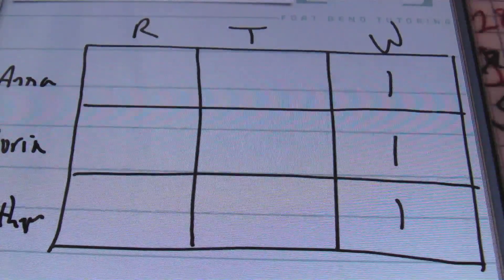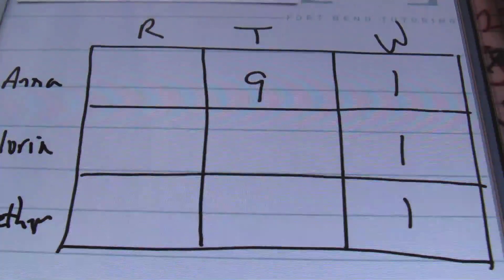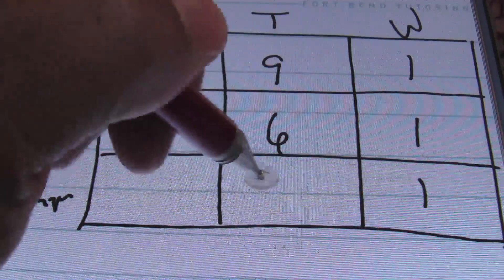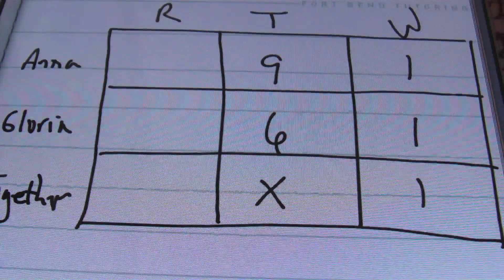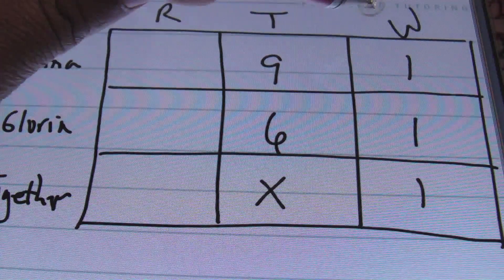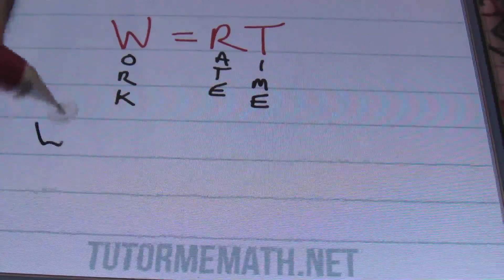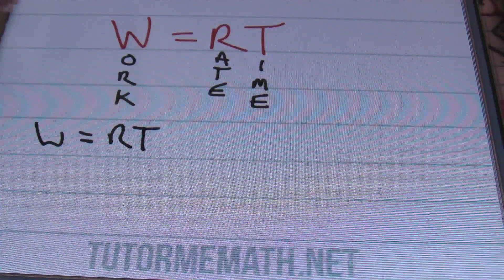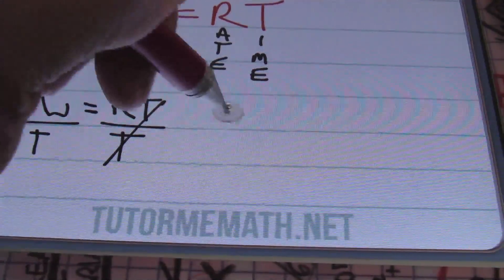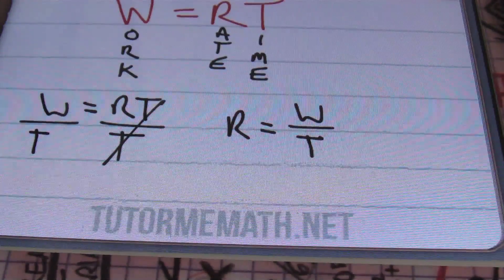Work equals one when you're doing one job. We also know it takes Anna nine hours and Gloria six hours to clean the house. What I don't know is how long it takes them together — so that's my variable X. The rate is always going to be the work divided by the time. If I take my work formula, W = R × T, and solve for rate by dividing both sides by T, I get rate equals work divided by time.